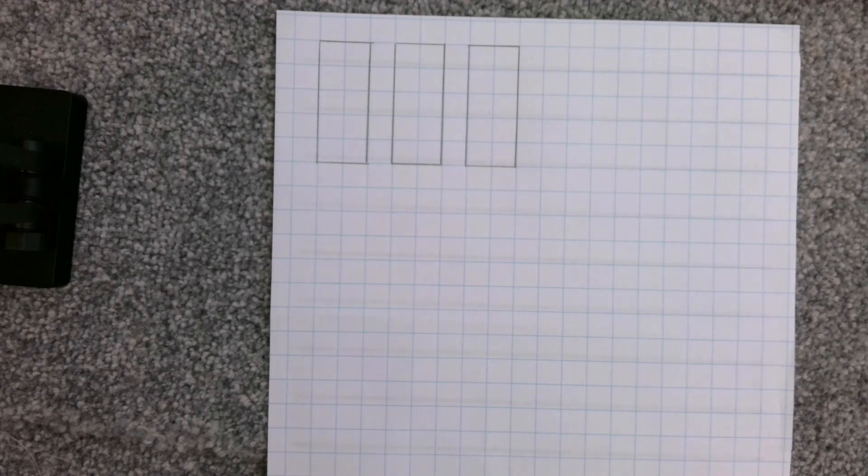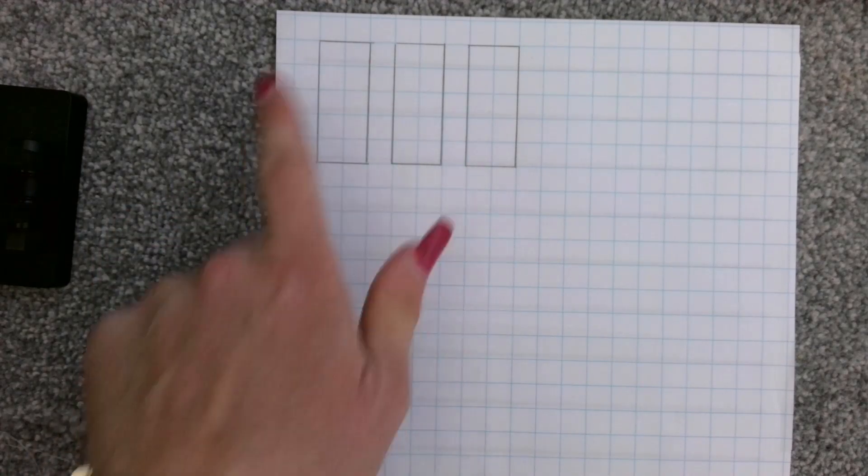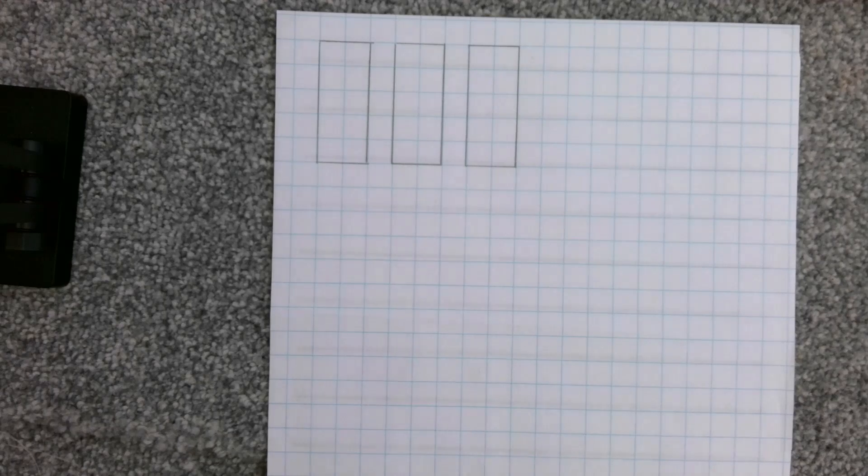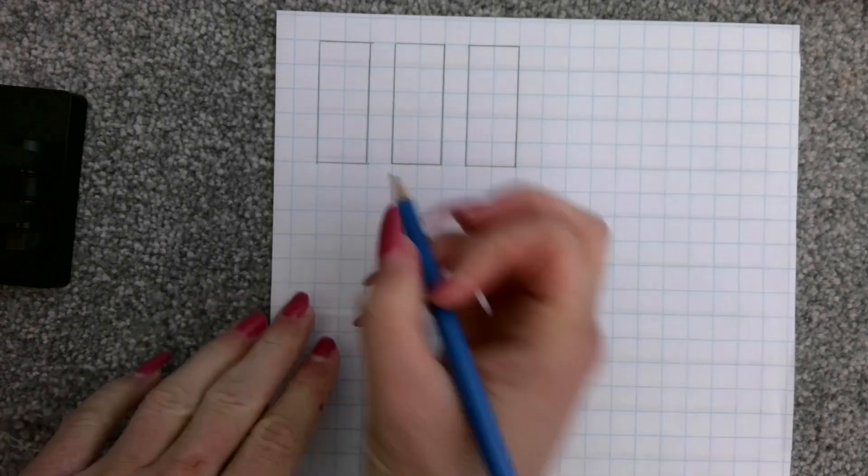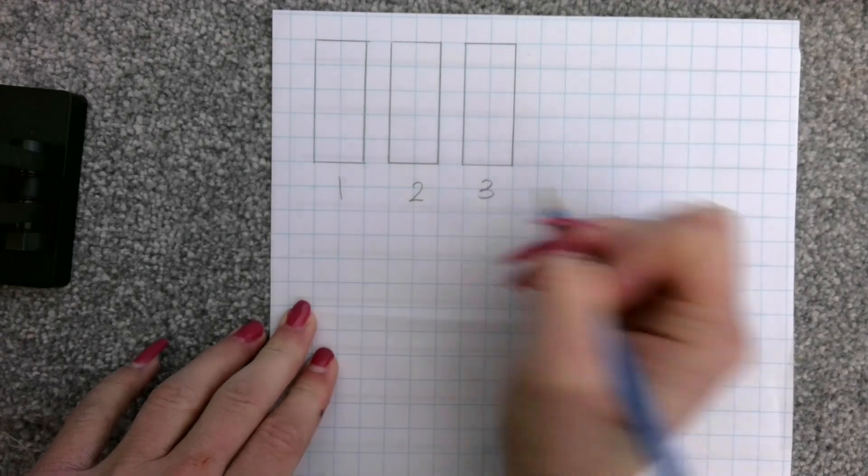Okay, I've drawn out three tens frames. All that means is this is the tens frame because it has got five either side and ten altogether. The first numbers I chose were one, two, and three.